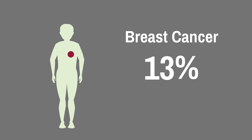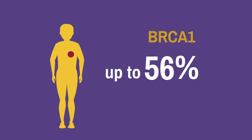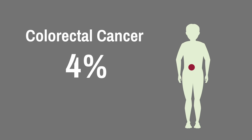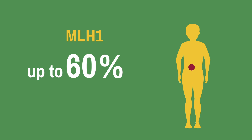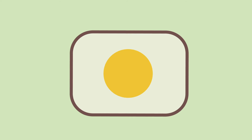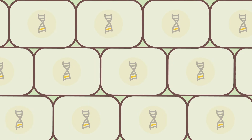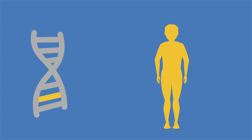Some inherited mutations increase the risk of cancer during a person's lifetime. Most women have a 13% risk of breast cancer in their lifetime. However, women with a BRCA1 mutation have up to a 70% risk of breast cancer. Most people have a 4% risk of colorectal cancer in their lifetime, but people with an MLH1 mutation have up to a 60% risk of colorectal cancer. People with these types of inherited mutations are born with one harmful mutation in the DNA of all of the cells of their body. This means that their cells need fewer steps or acquired mutations to develop cancer.